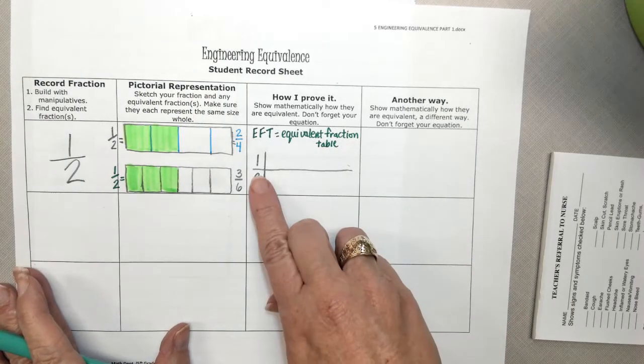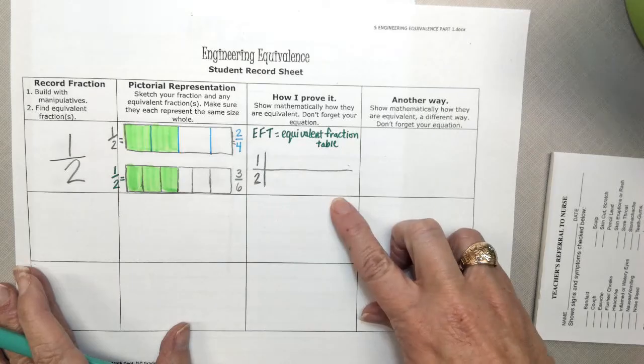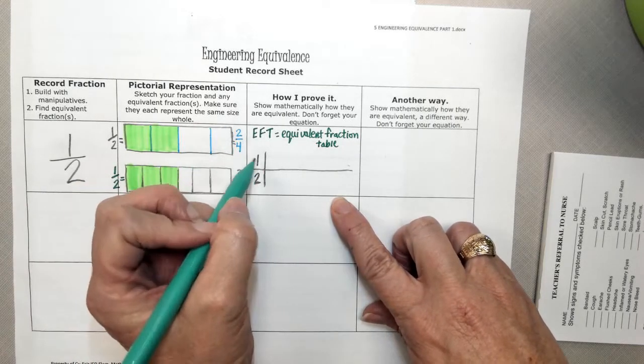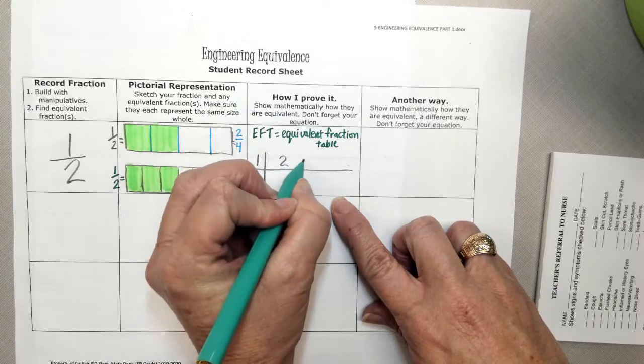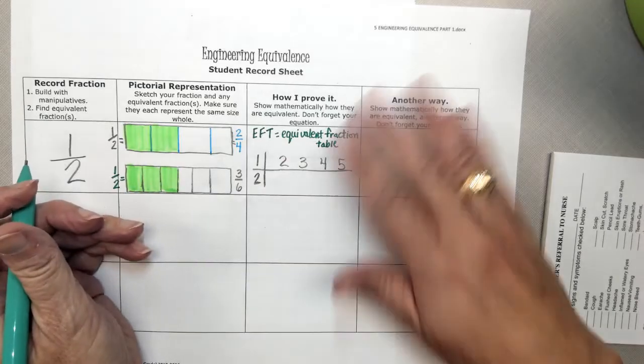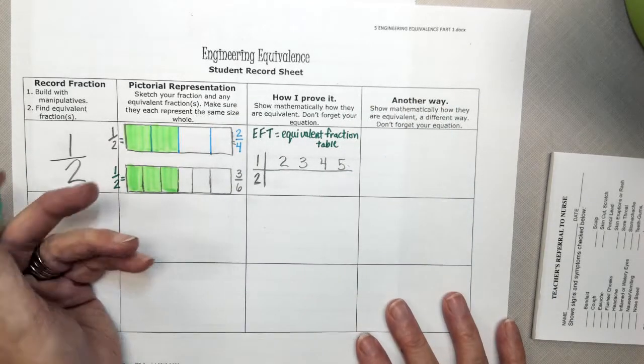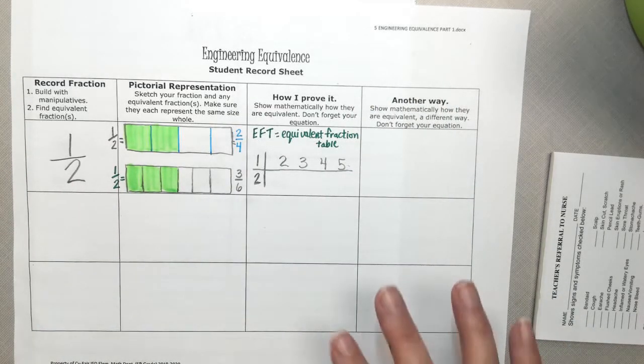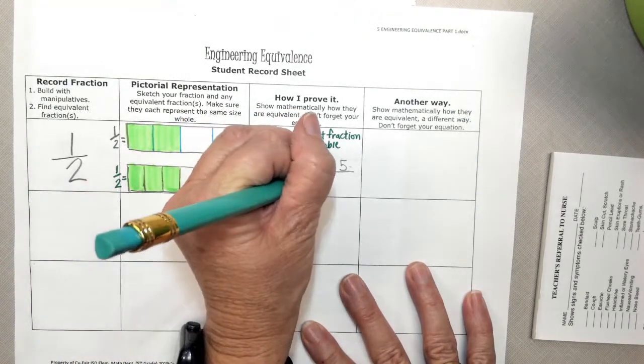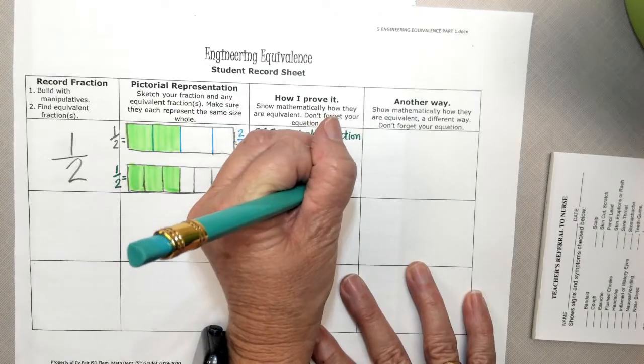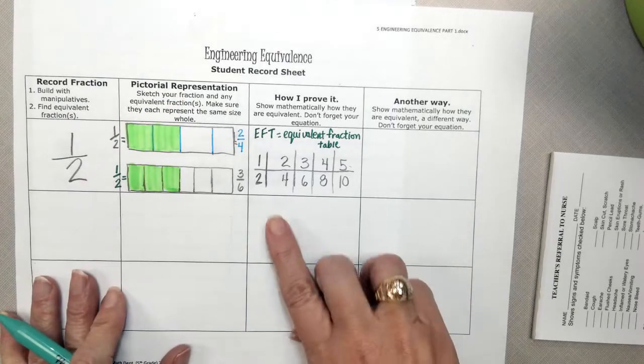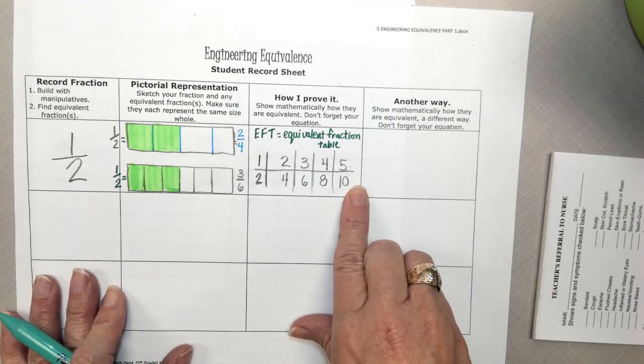And to skip count by 1's on the top, and skip count by 2's on the bottom. So that would be 1, 2, 3, 4, 5. And skip counting by 2's on the bottom, 2, 4, 6, 8, 10. By doing that, we're able to see some equivalents.